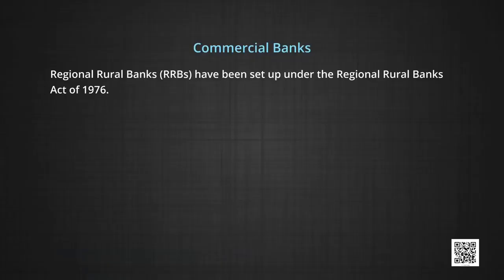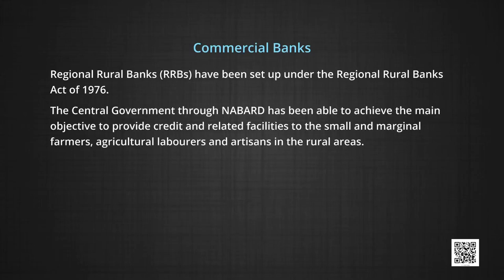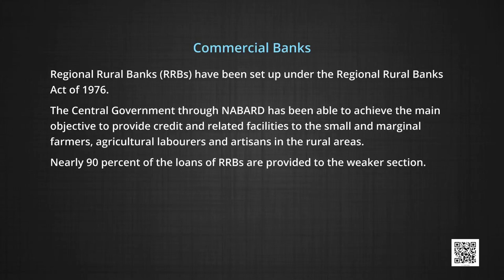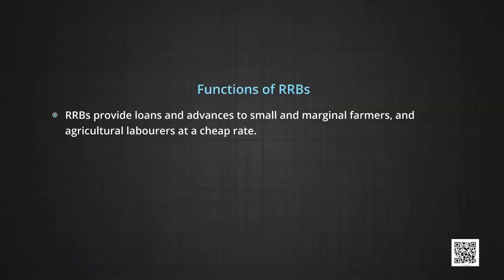Regional Rural Banks (RRBs) were set up under the Regional Rural Banks Act of 1976. The central government, through NABARD (National Bank for Agricultural and Rural Development), has been able to achieve the main objective of providing credit and related facilities to small and marginal farmers, agricultural laborers and artisans in the rural areas. Nearly 90 percent of the loans of RRBs are provided to the weaker sections. They provide loans at lower rates of interest and give higher rates of interest on deposits. RRBs provide loans and advances to small and marginal farmers and agricultural laborers at a very cheap rate.